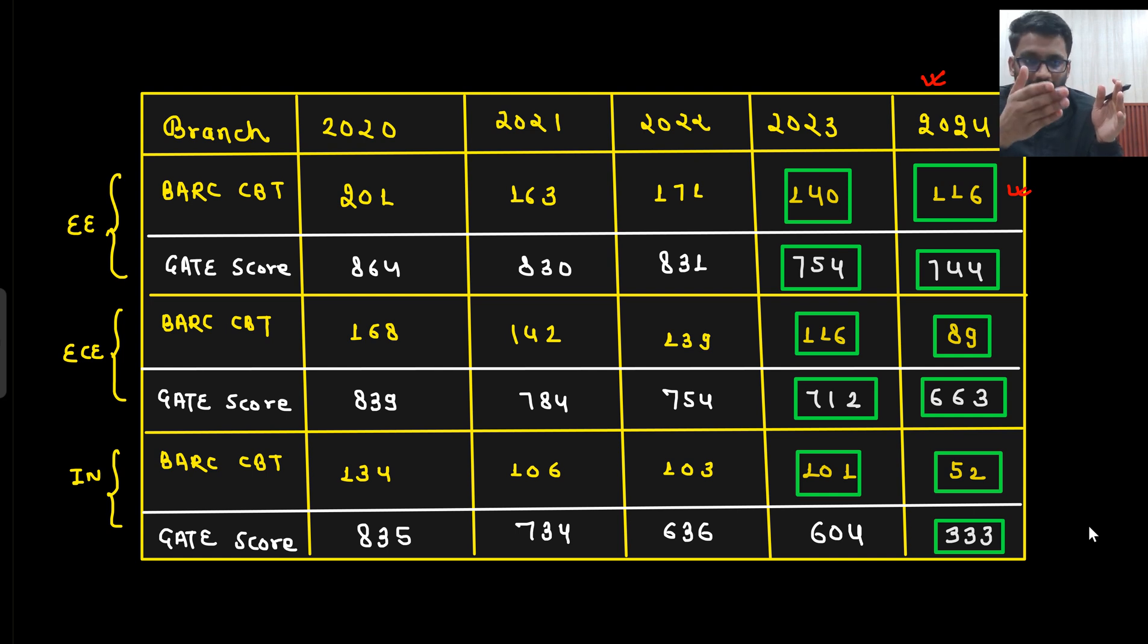But you clear the cutoff first. If you are not scoring enough in GATE, then go for BARC CBT and clear this particular cutoff. Not sure what will be the trend this year, but looking at the previous year trend you can be happy. From here, what data I told you about, I told you about these datas. Here you can see these data I told you about, but this was about 2020, but now it has drastically reduced in 2024.